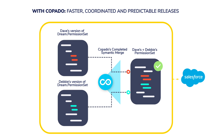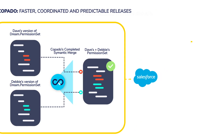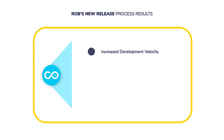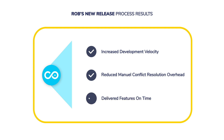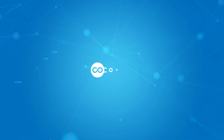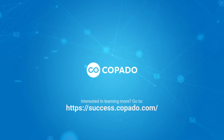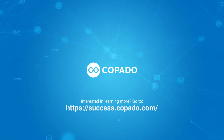It's as simple as that. With Capato, Rob was able to reduce the overhead of resolving Git conflicts and accelerated his development team's velocity. Learn more on how to leverage Capato automatic conflict resolution with Capato Academy.